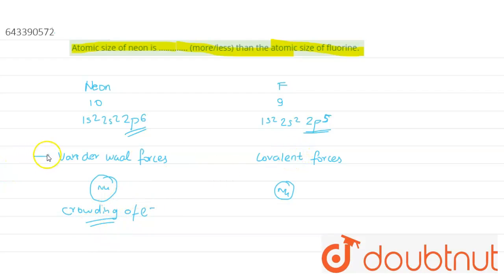So these are the two factors—the van der Waals forces and the crowding of electrons—which contribute to the bigger size of neon as compared to fluorine. So that's why neon will have more size as compared to fluorine.